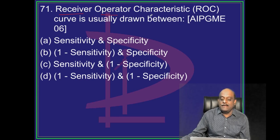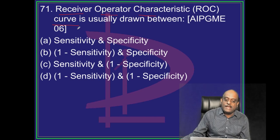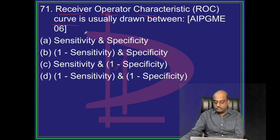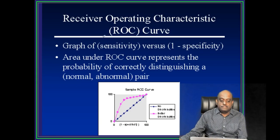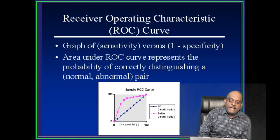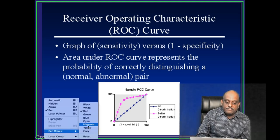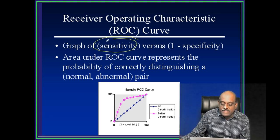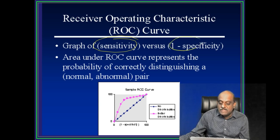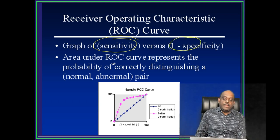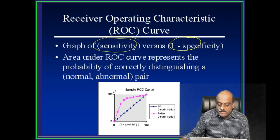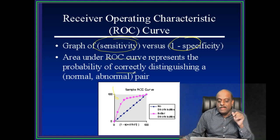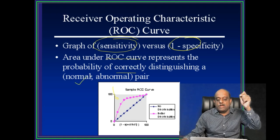Receiver operator characteristic curve, ROC curve. Fundamentally, receiver operating characteristic curve, kya hota hai, it is a graph of sensitivity versus 1 minus specificity. And where do you use it doctor, the area under this curve doctor, ROC curve, it represents the probability of correctly distinguishing between normal and abnormal pair.